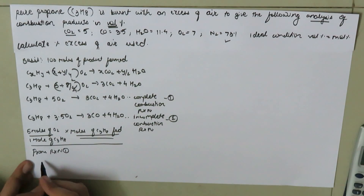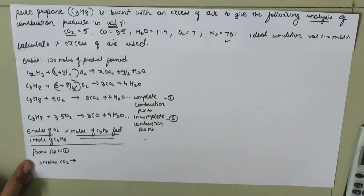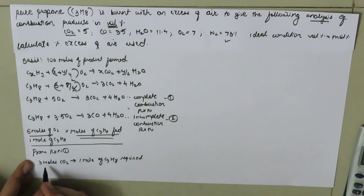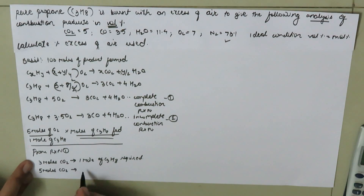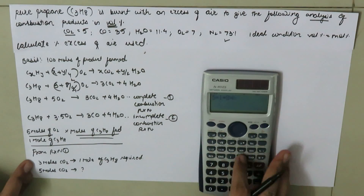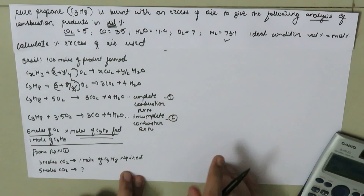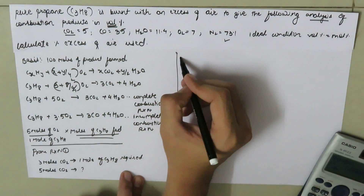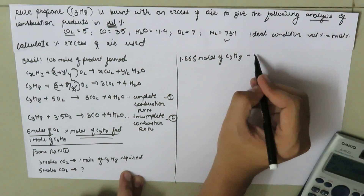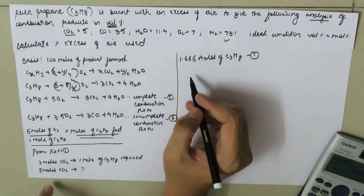From reaction one, when 3 moles of CO2 are formed, one mole of C3H8 is required. In the product we have 5 moles of CO2. Setting up the proportion: 5/1 = 3/x, so the moles of C3H8 required from reaction one are 1.6667 moles.